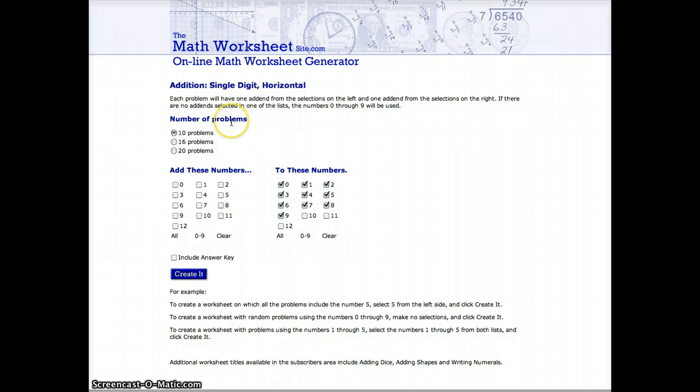So we need to choose how many questions we want to have on each worksheet. I'm going to choose 20 questions. And because we want adding one questions we want to add all numbers, choose all numbers and to those numbers we want to add one. So I'm going to click on clear and then just check the one box to show that we want to have adding one questions. We can include an answer key but with adding ones I'm not going to bother.